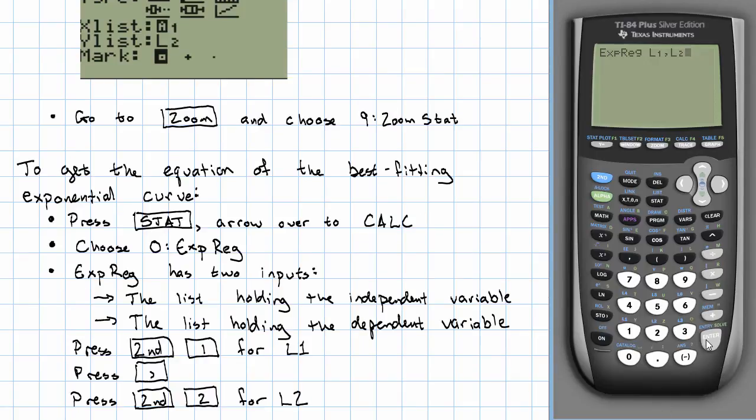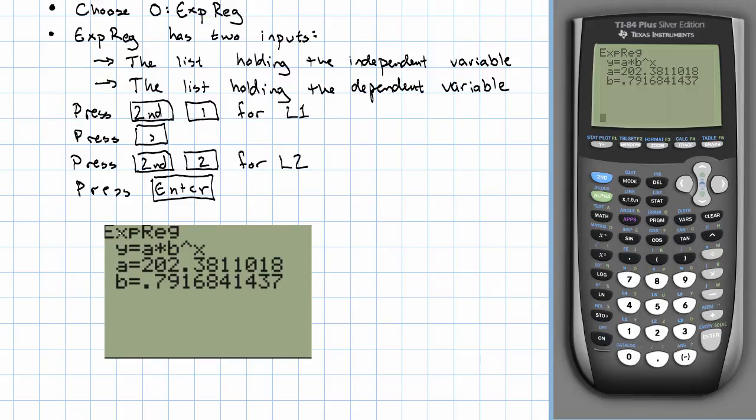Now let's see what happens when I press enter. The calculator shows me three lines. This first line shows me the form of my equation. It tells me that there are going to be two numbers, A and B, and then it tells me what A is and what B is.